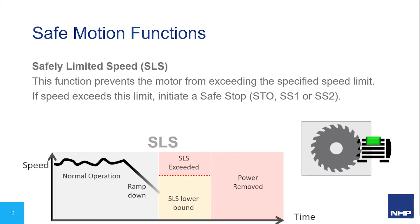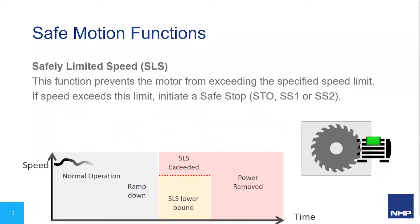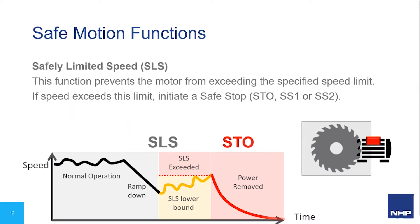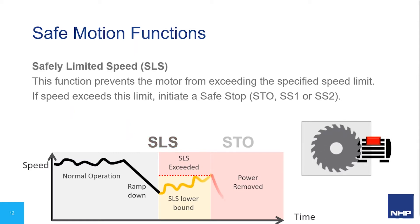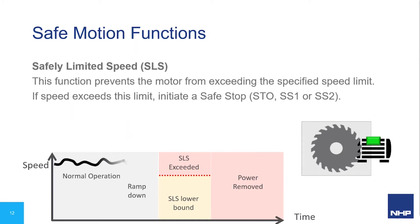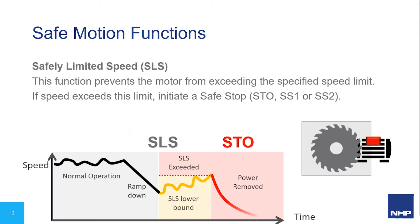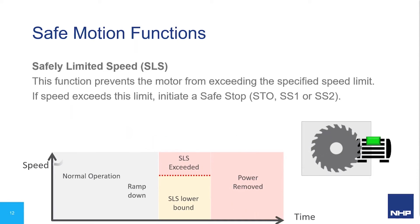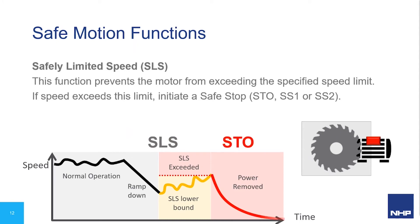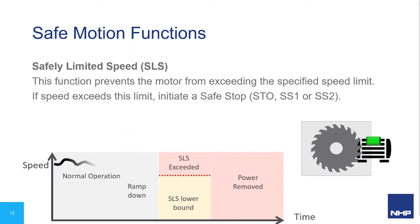Safely Limited Speed, or SLS, is used to monitor the speed of the motor to ensure it does not go above a predefined safe speed. It's mostly used in applications which require operator access to a guarded area, where the machine must remain at a slow speed. If SLS detects that the safe limit has been violated, the safety control system must initiate a safe stop function — using STO for an uncontrolled Category 0 stop, or SS1 for a controlled Category 1 stop. Ensuring speed remains as low as possible gives the operator the best chance to react quickly in the event of an error.